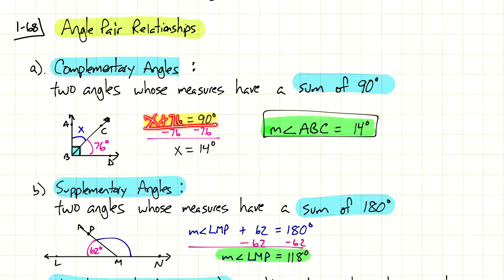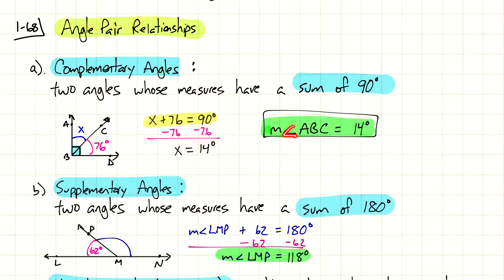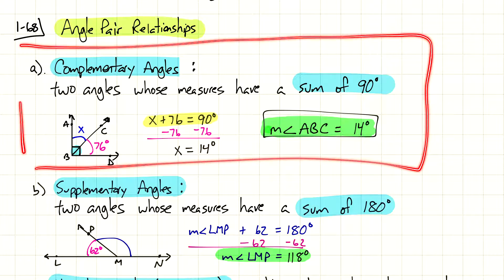Once that equation is set up, we bring in algebra skills to solve. Subtract 76 from both sides and x equals 14 degrees. So now we know the measurement of angle ABC is 14 degrees. That's a very common, simple test question.